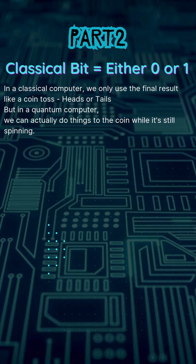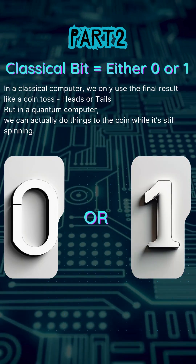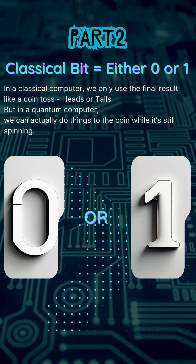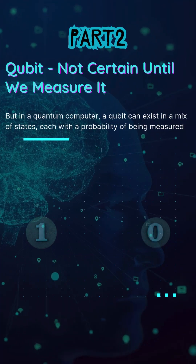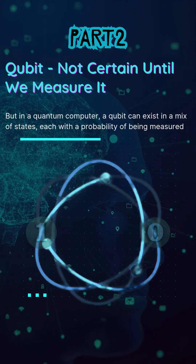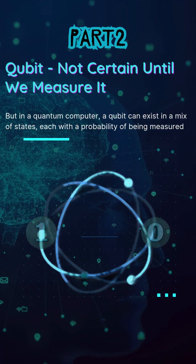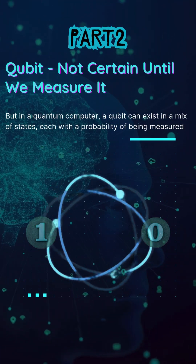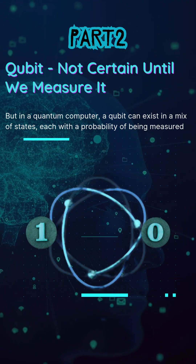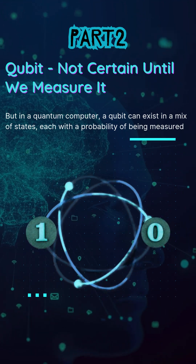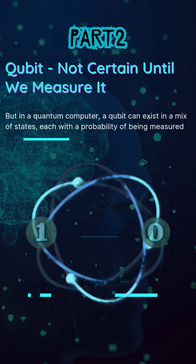In a regular computer, each bit is either a 0 or a 1, never both. But a qubit doesn't pick right away. Instead, it stays in a flexible state where it could become a 0 or a 1, depending on how we work with it.